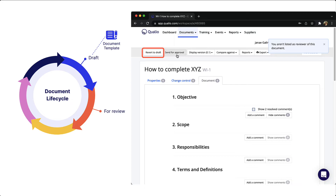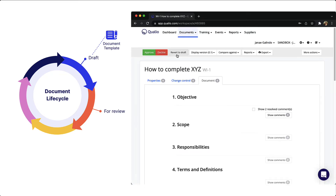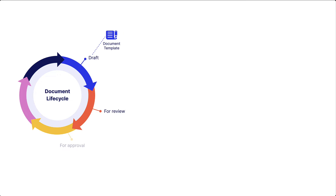The document owner will reply to any comments left by reviewers and resolve comments once completed. The review phase is intended to be a feedback loop between document creators and reviewers, which means the document may need to revert back to draft form if edits need to be made. This will spawn another review cycle. But if the document looks good and comments have been resolved, the document can be sent for approval.